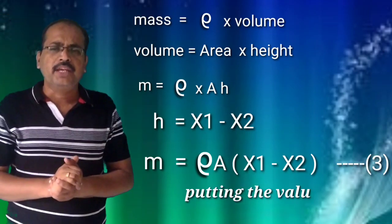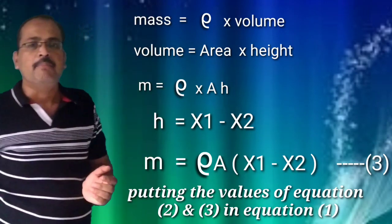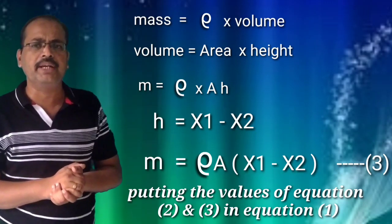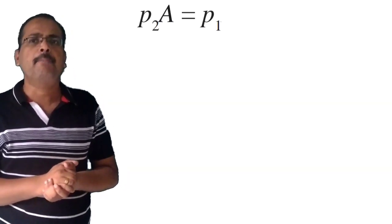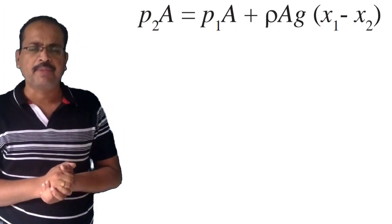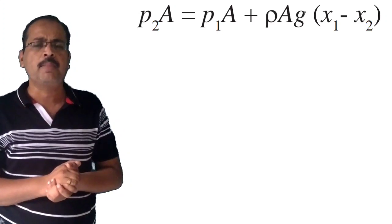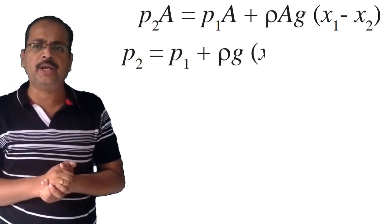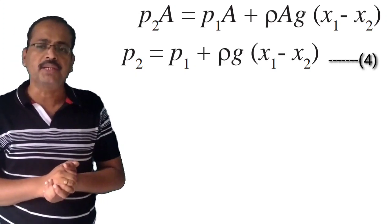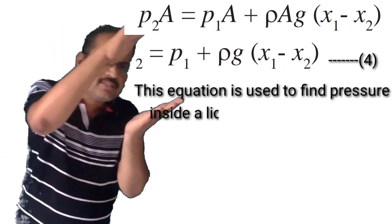Putting the values of equations 2 and 3 into equation 1: P2 times A is equal to P1 times A plus rho times A times (X1 minus X2) times g. Cancelling A from all three terms, we get P2 is equal to P1 plus rho times (X1 minus X2) times g. This is equation number 4, used to find pressure inside a liquid.